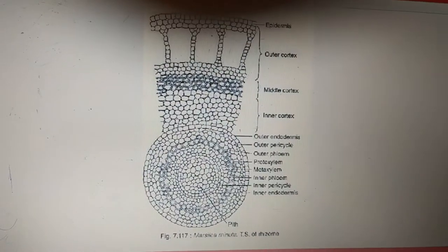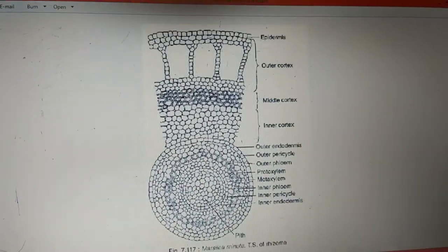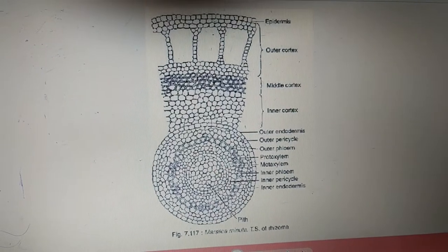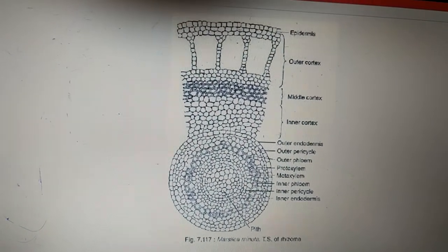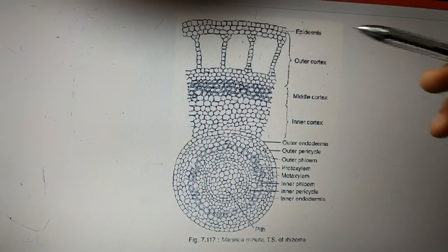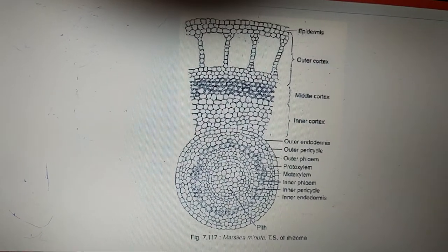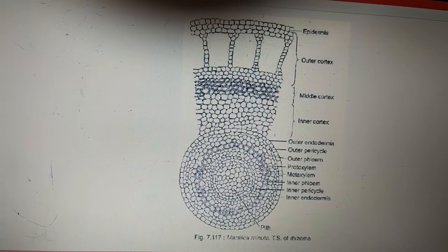We will be focusing on the anatomical features of Marsilia and this image in front of us is the transverse section of the rhizome. The rhizome has the outer epidermis followed by the cortical region and it is going to end in the center with a stele.